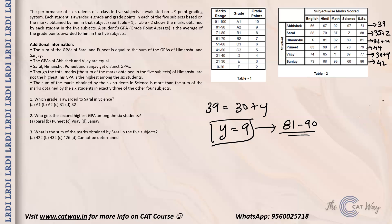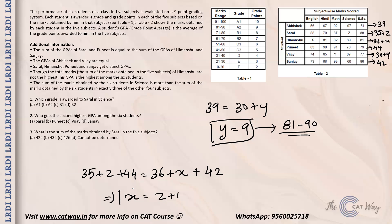From the constraint that Saral plus Puneet equals Himanshu plus Sanjay: Saral is 35 plus Z, Puneet is 44, Himanshu is 36 plus X, Sanjay is 40. Solving this gives X equals Z plus 1.